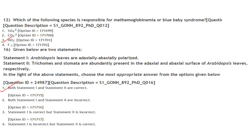Given below are two statements: Statement 1 — Arabidopsis leaves are adaxially and abaxially polarized. Statement 2 — Trichomes and stomata are abundantly present on the adaxial and abaxial surface of Arabidopsis leaves respectively. Both statements 1 and 2 are correct.